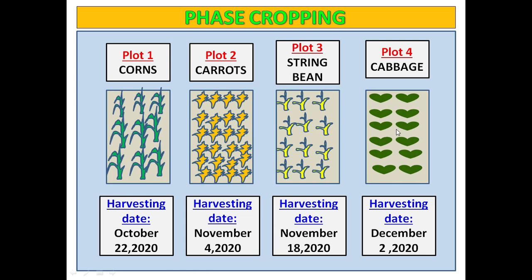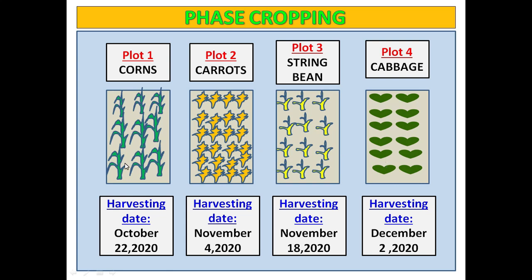By the time all crops are harvested, more crops are planted so that another crop catches the next harvest date. Advantages of phase cropping: number one, it maintains a regular supply of produce to consumers and steady income is received; number two, it prevents oversupply or glut of a commodity. A glut lowers prices on the market and may prevent the farmer from making a profit — phase cropping prevents this.